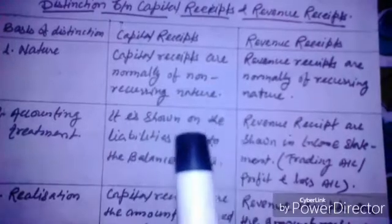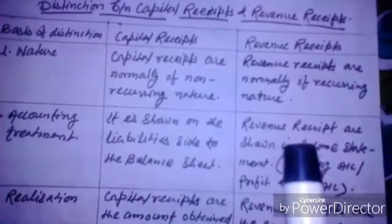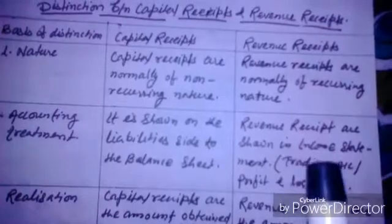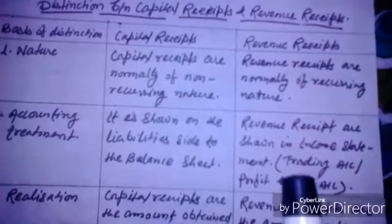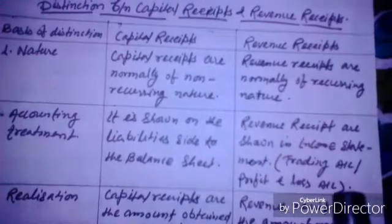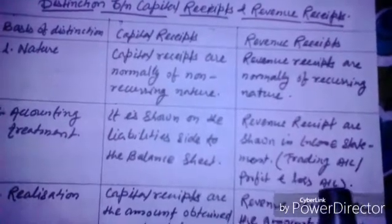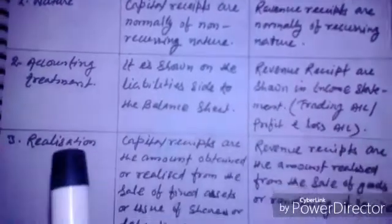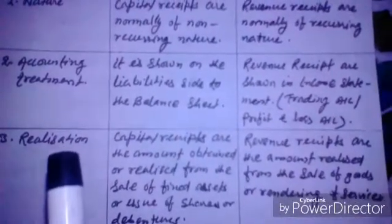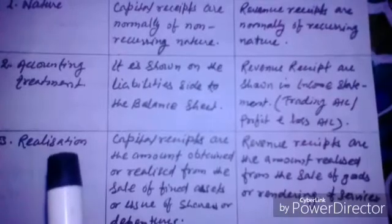The second basis of distinction is accounting treatment. Capital receipts are shown on the liability side of the balance sheet, whereas revenue receipts are shown in the income statement, that means the trading or profit and loss account.